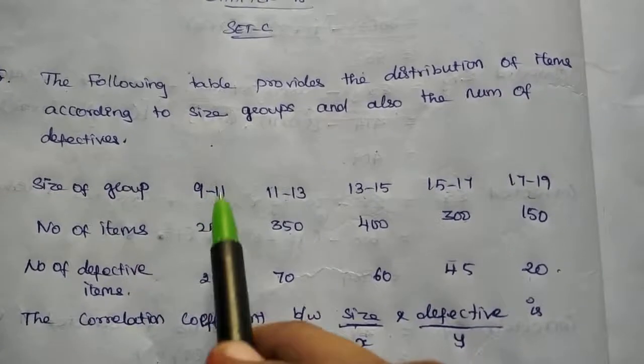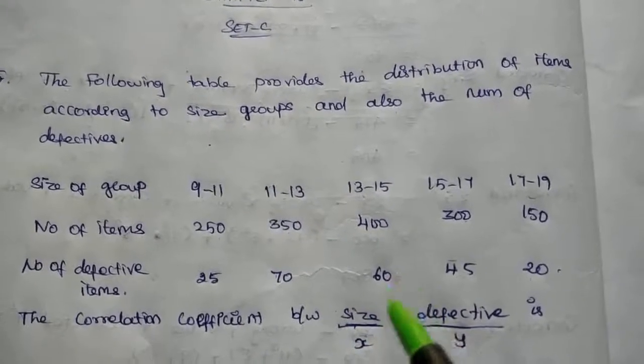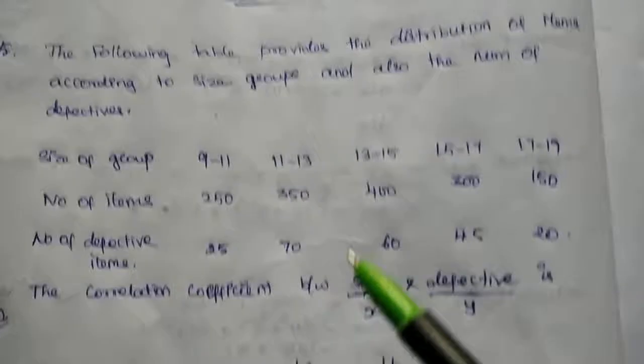We need to get the midpoint. 9 to 11, 11 to 13, midpoint to midpoint. X value is direct, so first size is X value. We need to get the midpoint.